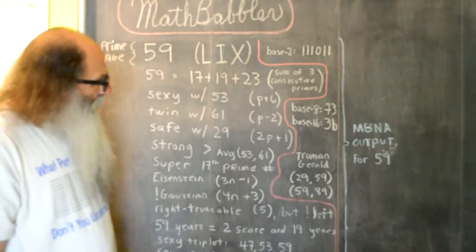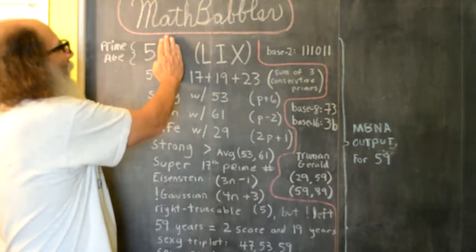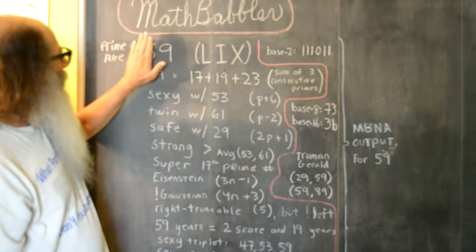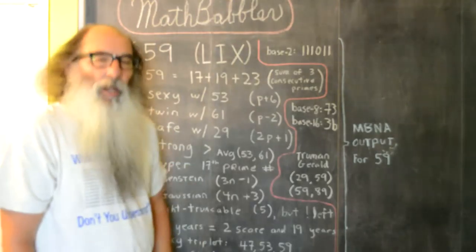It's a right truncatable prime because if we truncate off the rightmost digit, we get 5, and 5 is prime. It is not, however, left truncatable because if I truncate off the leftmost digit, we get 9, and 9 is not prime.